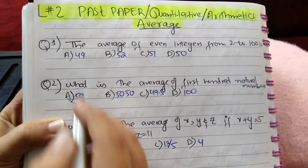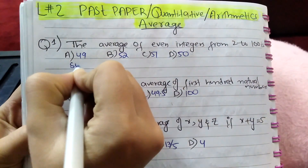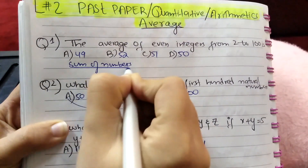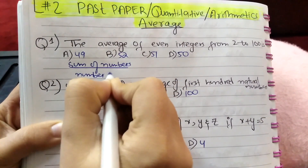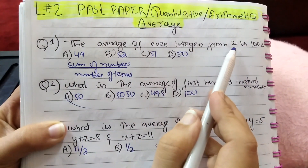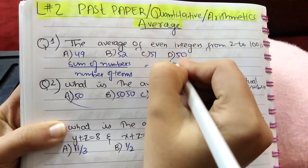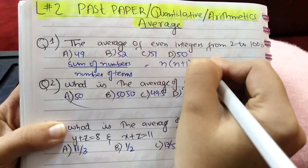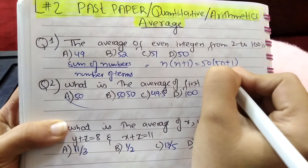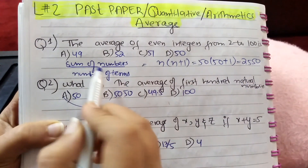You have to find the average. Remember, average is always equal to sum of numbers divided by number of terms. First you have to find the sum of numbers. As there are numbers from 2 to 100, there are 50 terms. Use the formula n into n plus 1, where n is 50. 50 plus 1 is 51, and when 51 is multiplied with 50 this will be 2550.